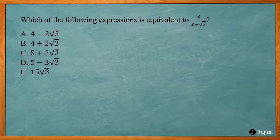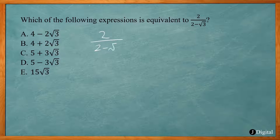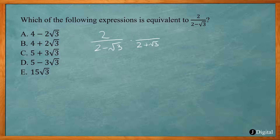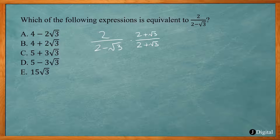Now this one says which of the following expressions is equivalent to 2 divided by 2 minus the square root of 3. Again, we don't want a radical in the denominator of a fraction. In this one we need to multiply by the conjugate, which is going to be 2 plus the square root of 3 — I just changed the minus in the middle to plus. I multiply the top and bottom by the same thing, so I'm really just multiplying by 1, which doesn't change the value.